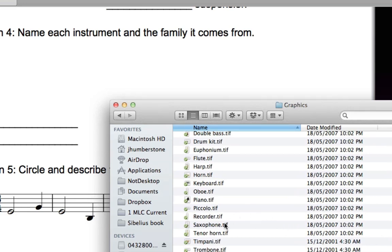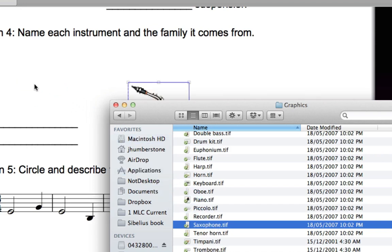If you have located that folder in Windows Explorer or in the Mac OS Finder, you can simply drag the three required images straight onto your score.